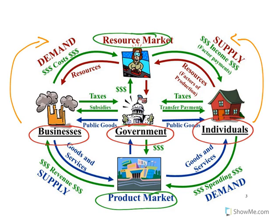Looking at just the outer rings — individuals and businesses, setting aside government for a moment — the green arrows represent the flow of money throughout the economy, while the blue and red arrows represent the flow of goods and resources. They move in opposite directions: money flows clockwise and stuff flows counterclockwise throughout the circular flow model.